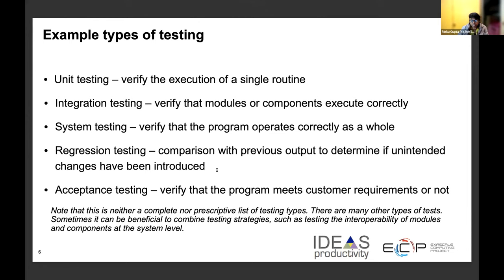There are many different types of tests and testing strategies. The first three are somewhat of a hierarchy. At the bottom we have unit testing, which checks if a single routine or function is operating correctly. The next level is integration testing, which checks whether a group of components or functions are operating correctly. Then you have system testing, which checks if the program operates correctly as a whole and meets specific requirements. In addition, there are other strategies like regression testing — checking if changes you've introduced haven't caused problems to the expected behavior — and acceptance testing, which checks the program as a whole and ensures the software meets the requirements of the customer.